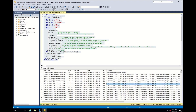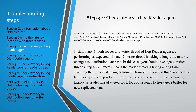What does this message include? If state equals 1, both the reader and writer threads of the log reader agent are performing as expected. If state equals 2, the writer thread is taking a long time to write changes to the distribution database. In this case, you should investigate the writer thread and go to step 4.2. If state equals 3, the reader thread is taking a long time scanning the replicated changes from the transaction log, and this thread should be investigated. You should go to step 4.1 in this case.